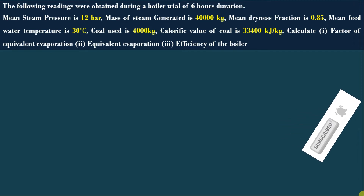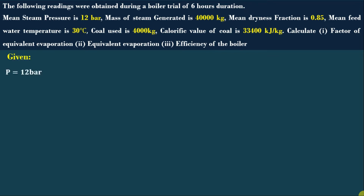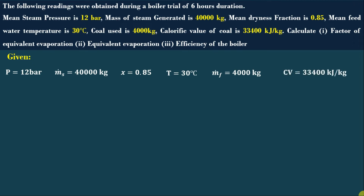The following readings were obtained during a trial of 6 hours duration. The mean steam pressure is 12 bar. Mass of steam generated is 40,000 kg per 6 hours. Mean dryness fraction is 0.85. Mean feed water temperature given to the boiler is 30°C. Coal used in the boiler is 4,000 kg. The calorific value of that coal is 33,400 kJ per kg. We need to find out the factor of evaporation, equivalent evaporation, and efficiency of the boiler.